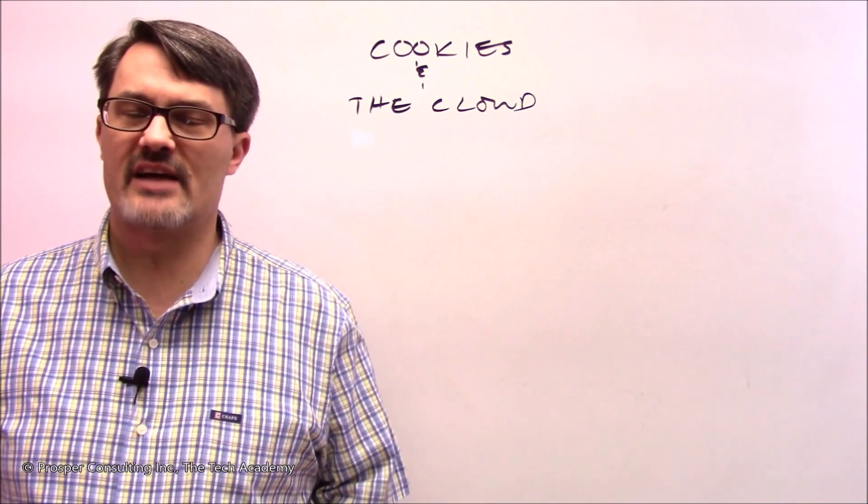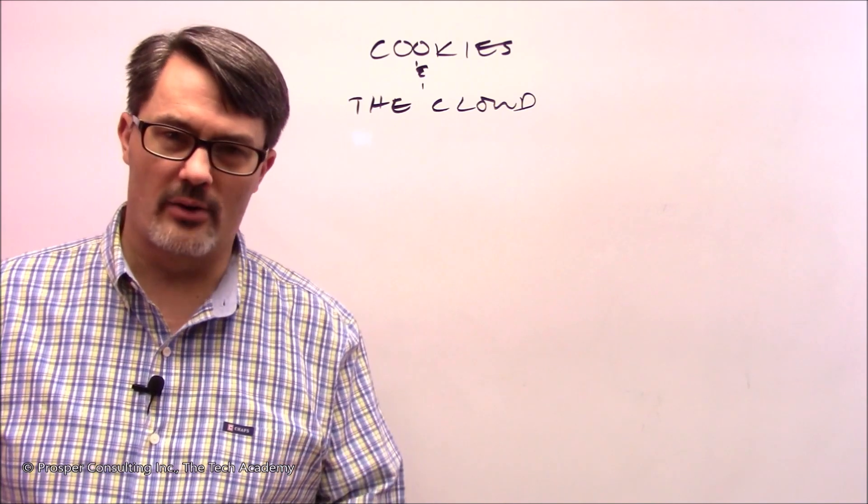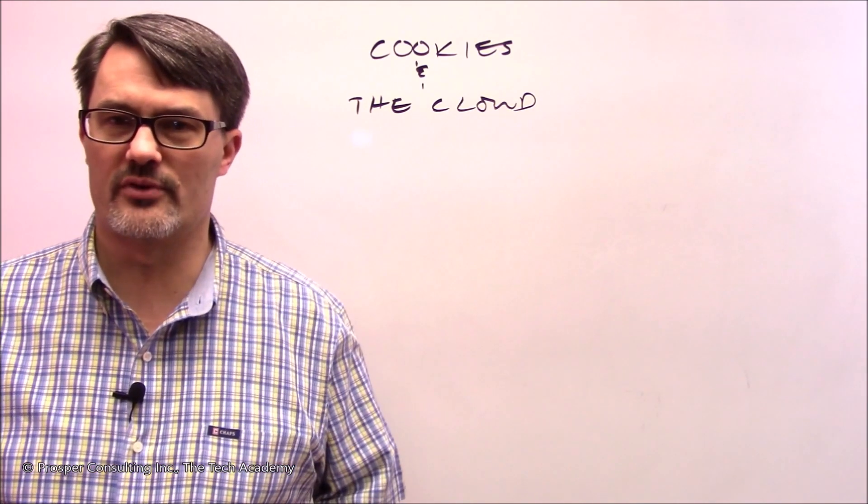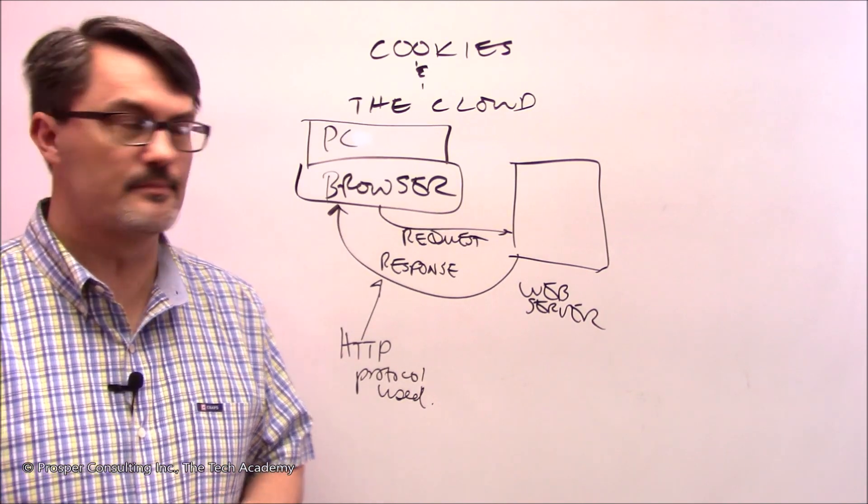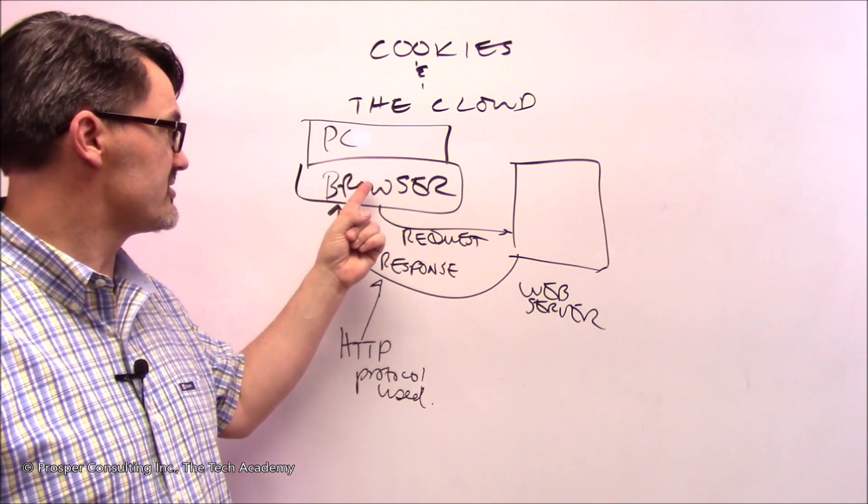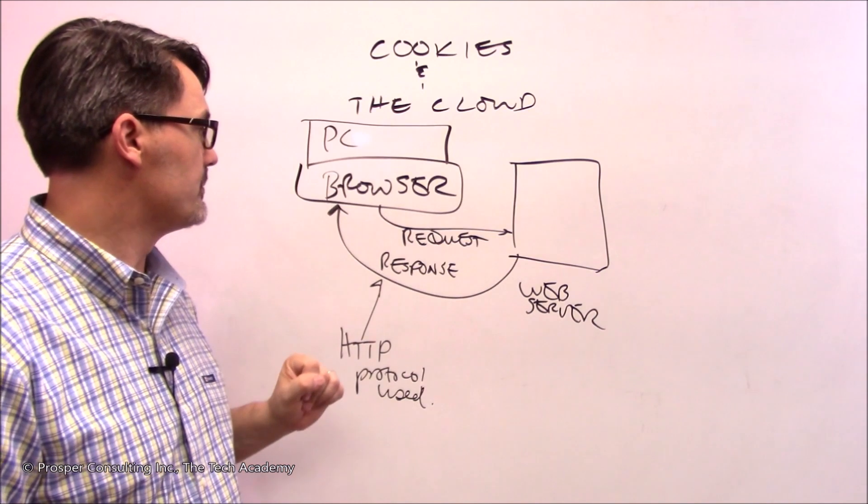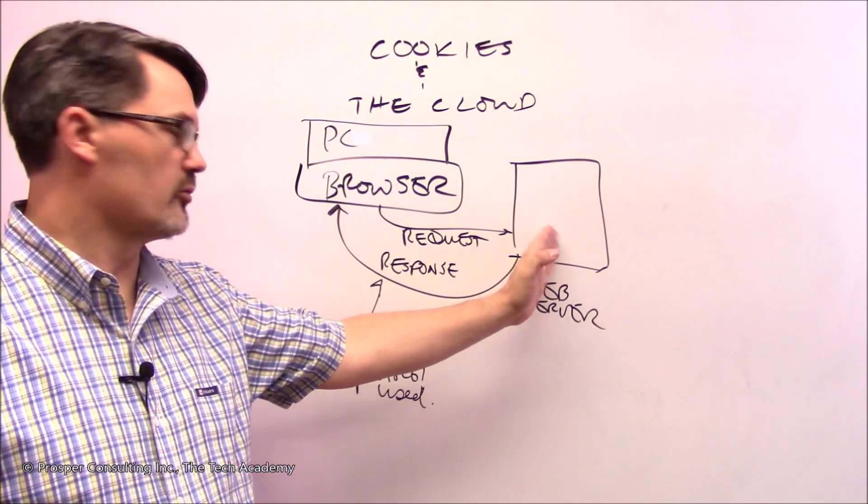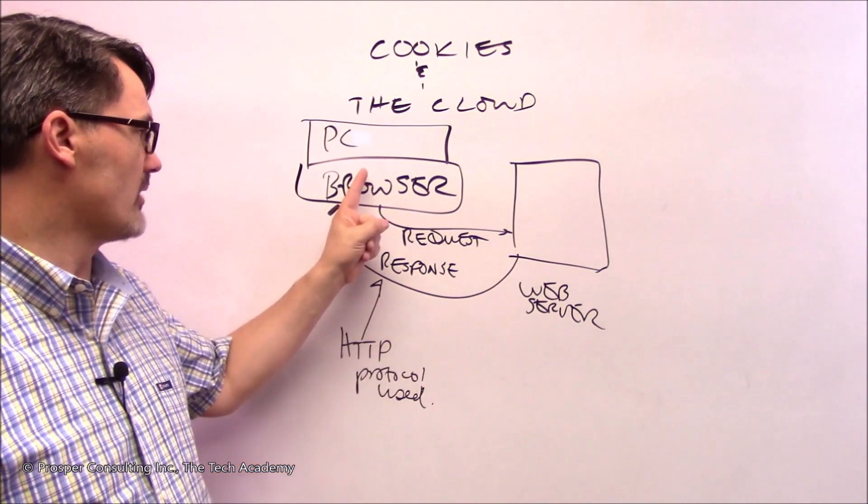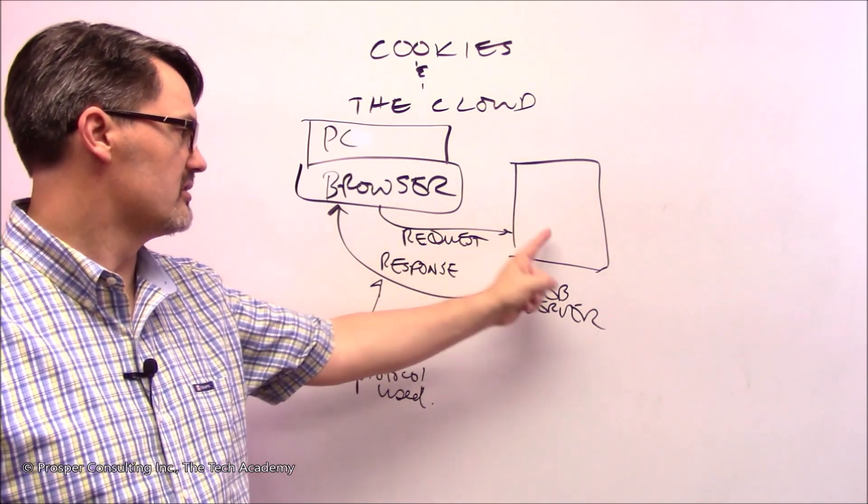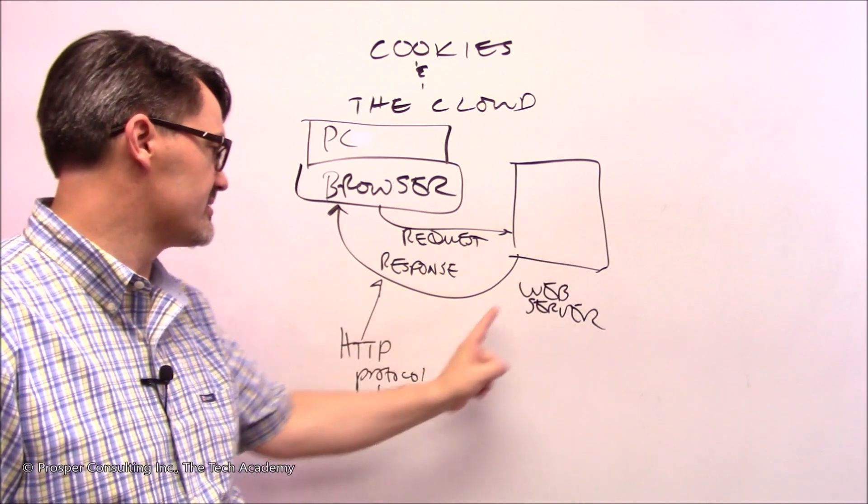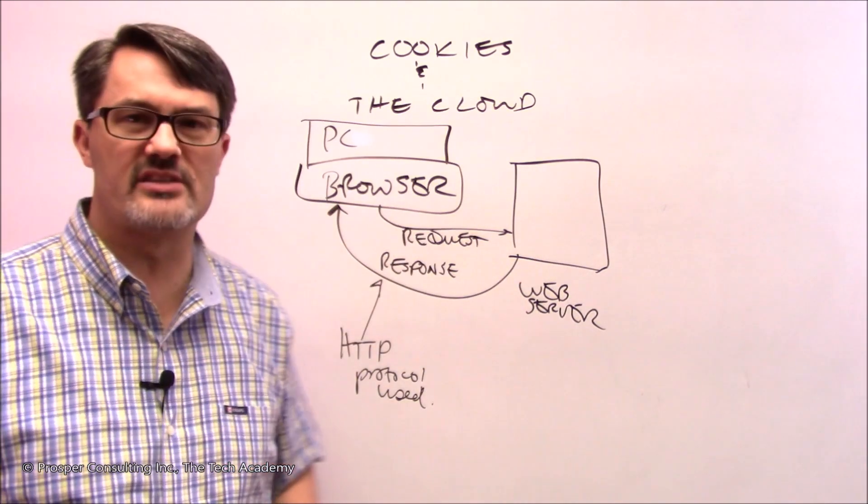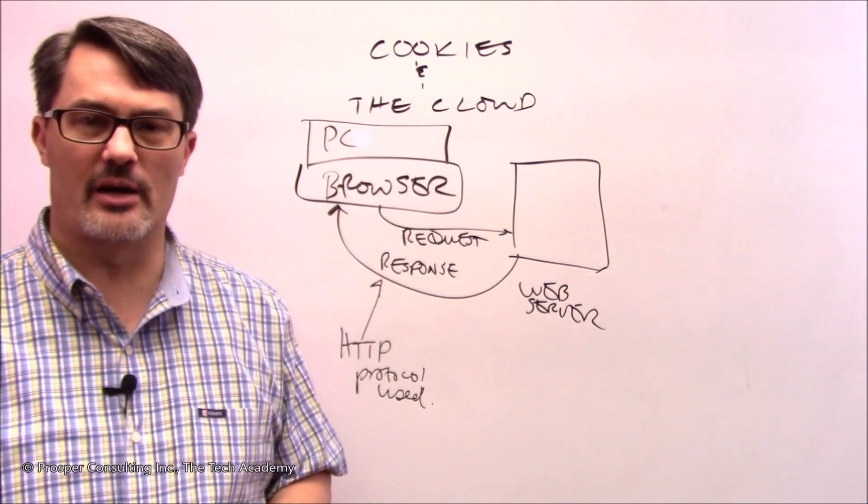Let's look at a basic diagram of a browser connecting to a web server. A browser software is installed on a user's computer. There's a web server out on the internet for a specific website. The browser issues a request to the website. The web server finds the applicable files and sends them back as a response.